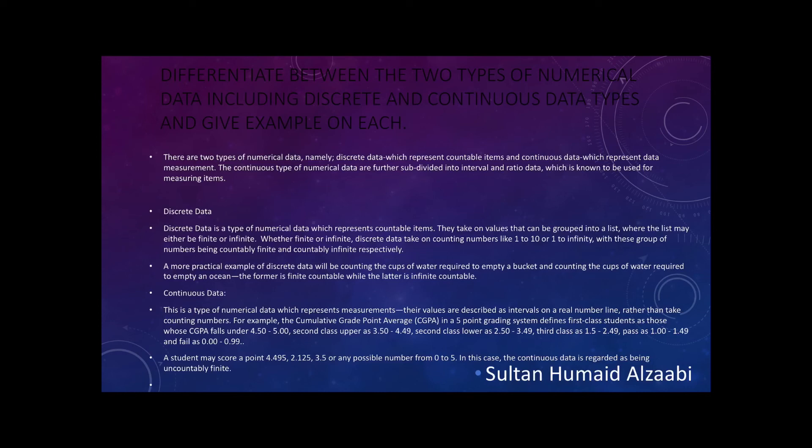A student may score a GPA of 4.44, 4.495, 2.125, 3.5, or any possible number from 0 to 5. In this case, the continuous data is regarded as being uncountably finite.